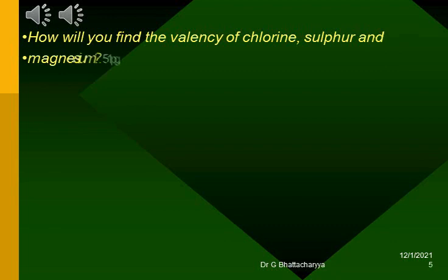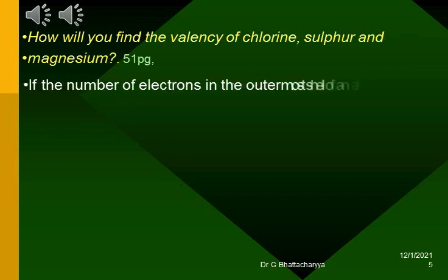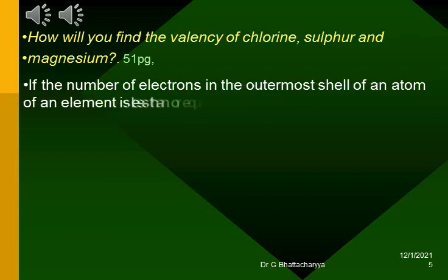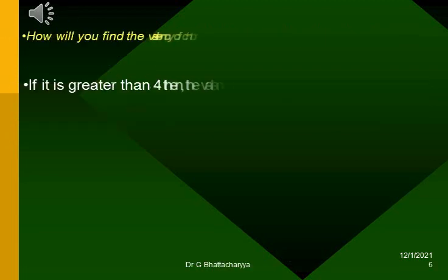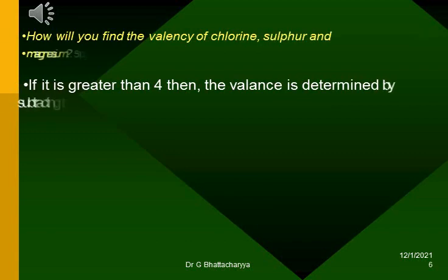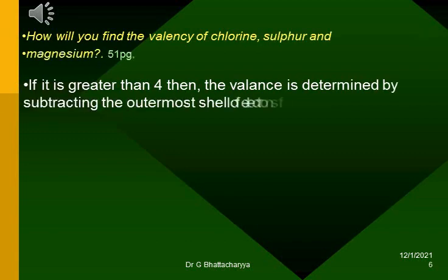How will you find the valency of chlorine, sulfur and magnesium? If the number of electrons in the outermost shell of an atom of an element is less than or equal to 4, then the valency of an element is equal to the number of electrons in the outermost shell. If it is greater than 4, then the valence is determined by subtracting the outermost shell of electrons from 8.